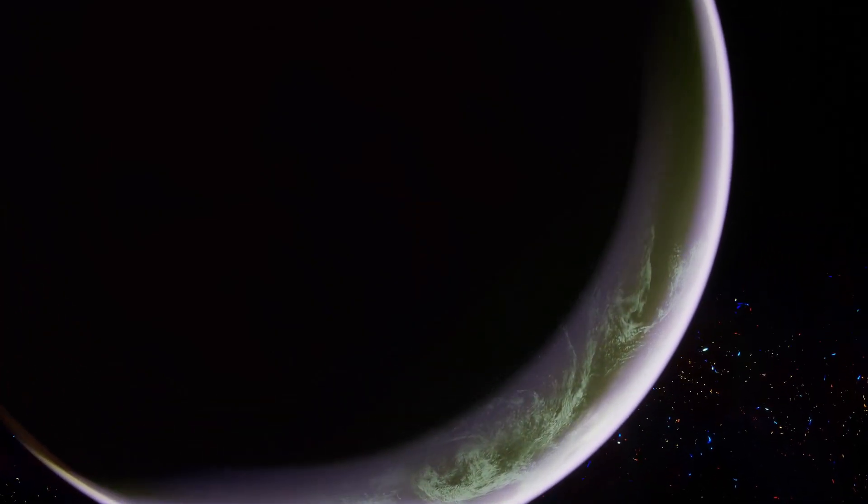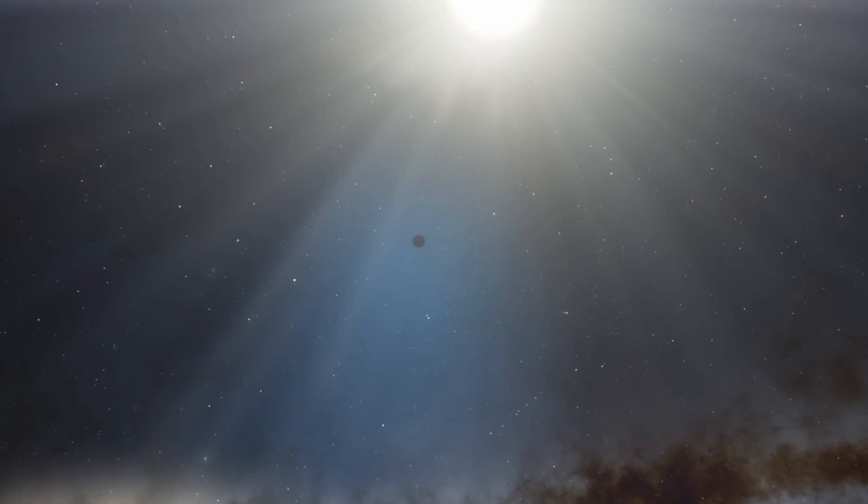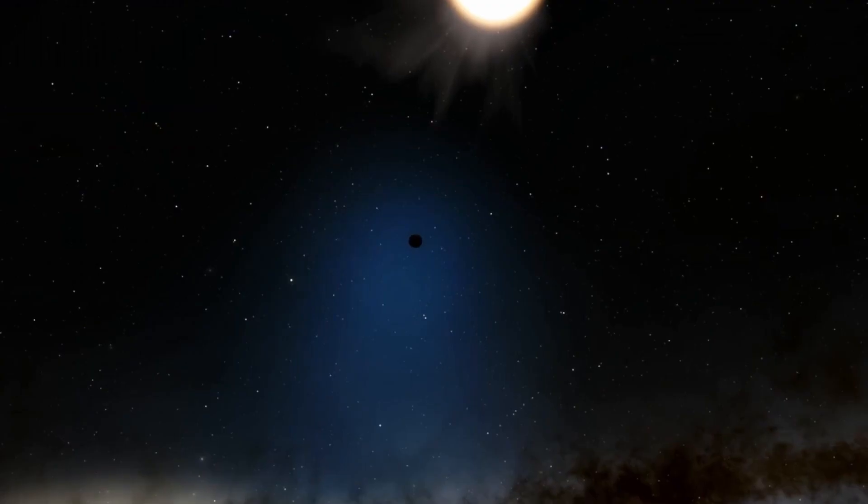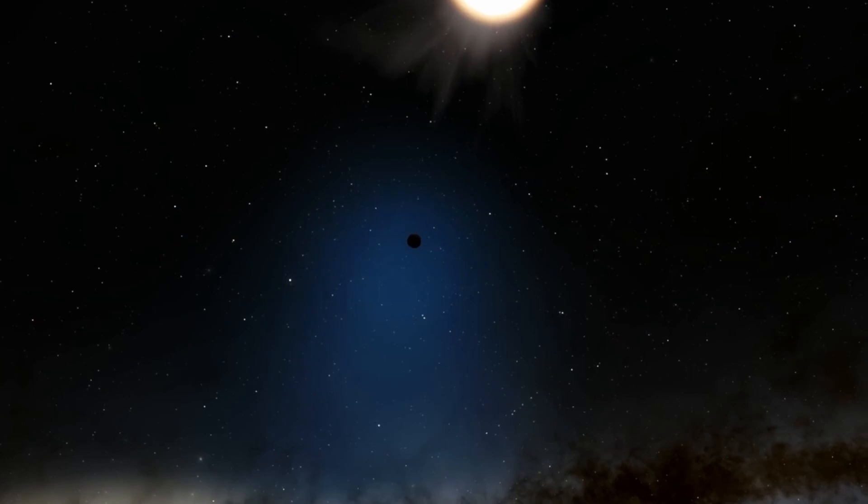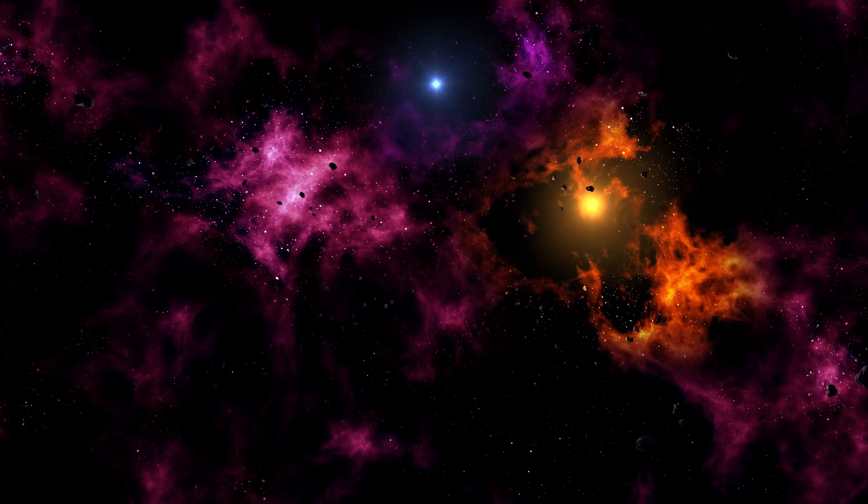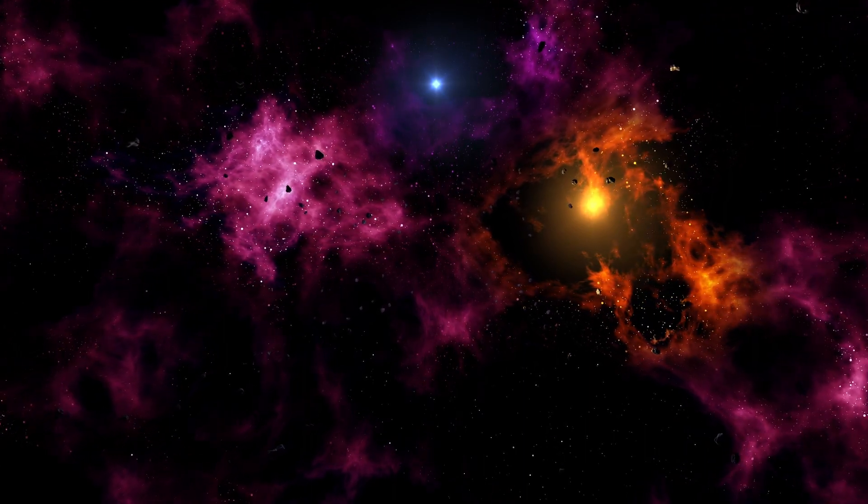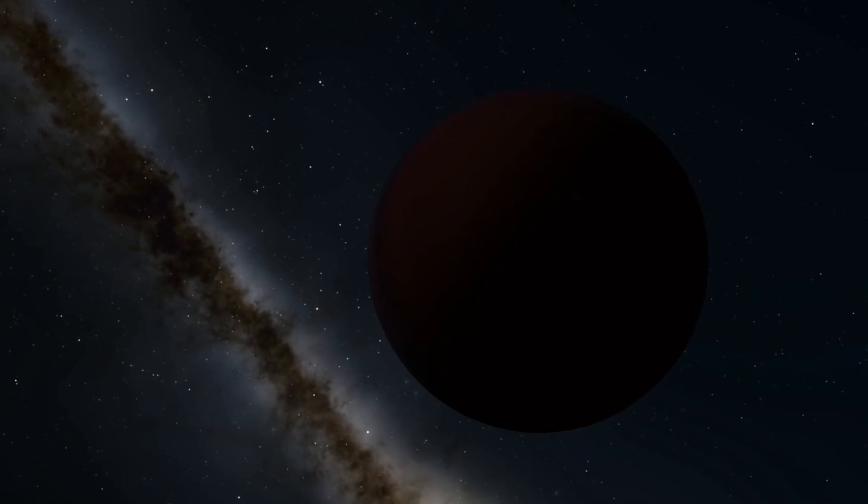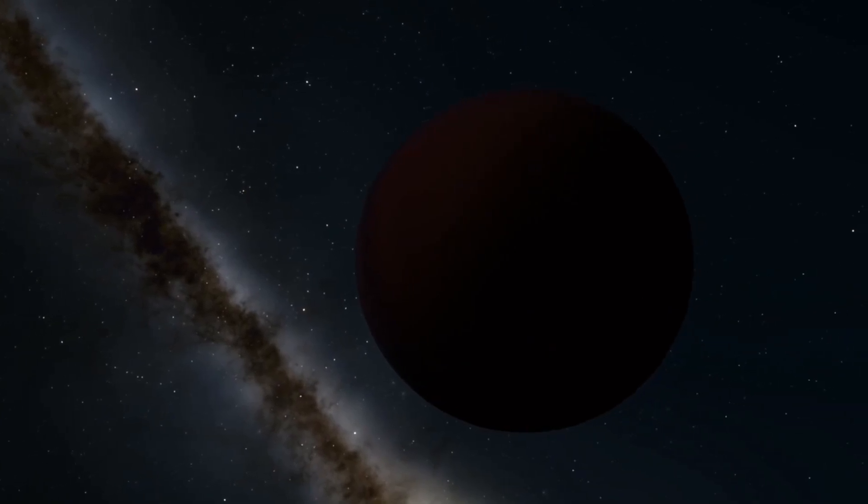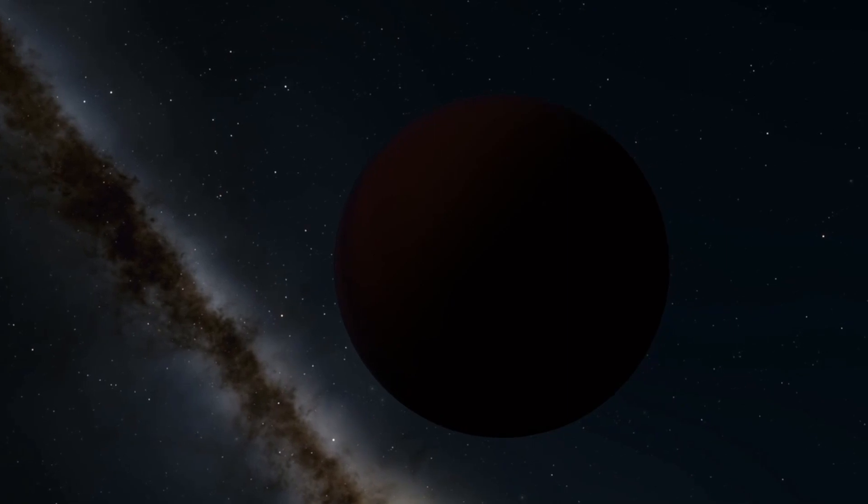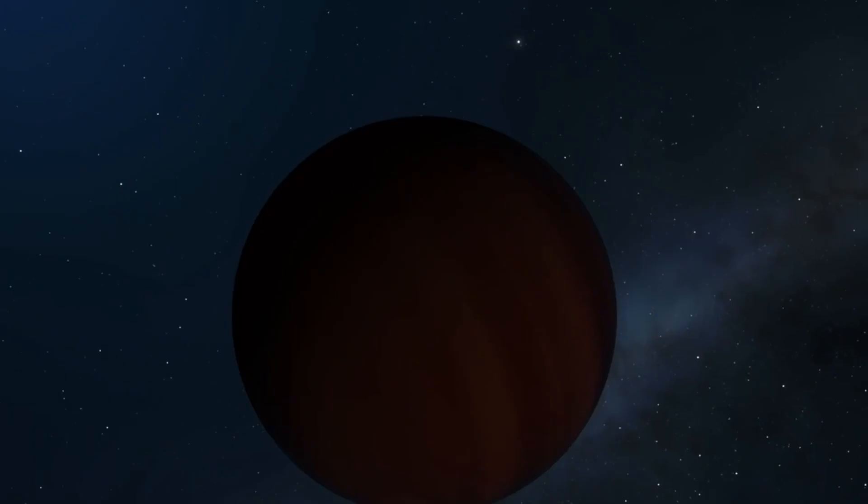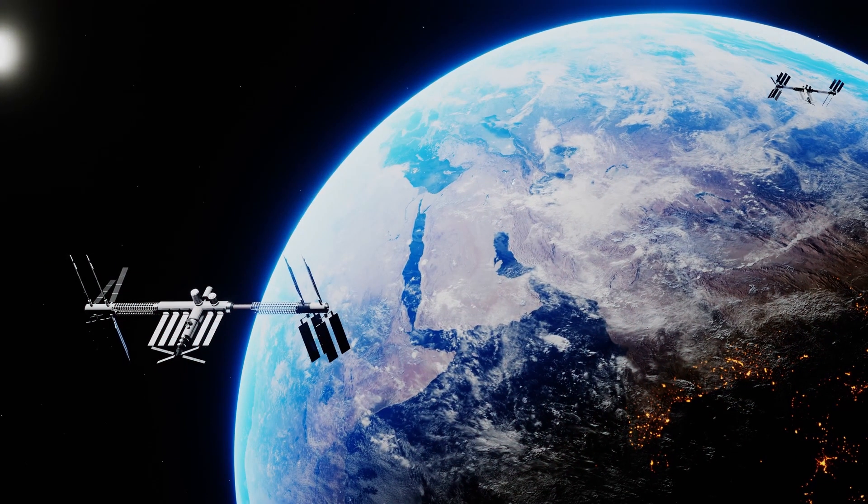The last one is the darkest planet in the universe, TrES-2b, is an extrasolar planet orbiting the star GSC 03549-02811 located 750 light years away from the solar system. The planet was identified in 2011 as the darkest known exoplanet, reflecting less than 1% of any light that hits it. Reflecting less light than charcoal, on the surface the planet is said to be pitch black.